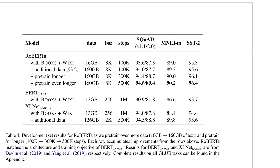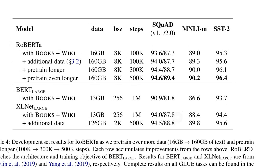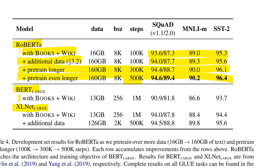They also investigate how long to pre-train. Comparing original BERT, XLNet, and RoBERTa: with the original data, RoBERTa already beats BERT but does not yet beat XLNet. Adding more data brings it mostly on par with XLNet. Pre-training for longer steps improves it further, and if the number of steps matches XLNet's steps with their additional data, RoBERTa outperforms XLNet as well.